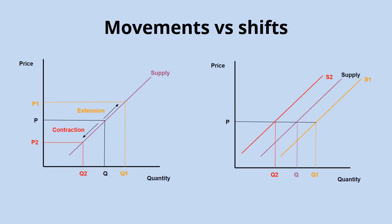Again, make sure you're using the correct language. A change in price leads to a change in quantity supplied — an increase in price leads to an extension along the supply curve, and a decrease in price leads to a contraction along the supply curve. A change in any of the other factors affecting supply — cost of production, technology, taxes, subsidies — leads to an increase or decrease in supply and a shift of the entire supply curve.